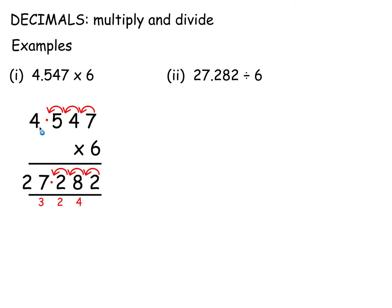In other words, the number 4, 5, 4, 7 was 1,000 times too big, so it had to be divided by 1,000 to get 4.547. So you divide your answer by 1,000. That means 4, 5, 4, 7 times 6 — ignore the decimal point, then put the decimal point in at the end.